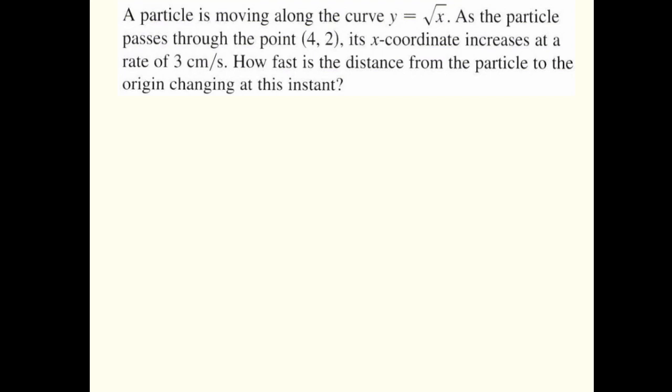We have a particle moving along the curve y equals square root of x. As the particle passes through the point (4, 2), its x-coordinate increases at a rate of 3 centimeters per second. How fast is the distance from the particle to the origin changing at that instant?